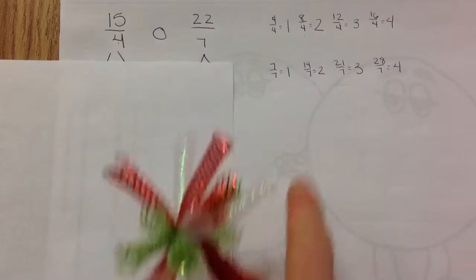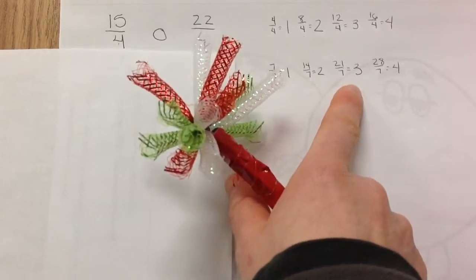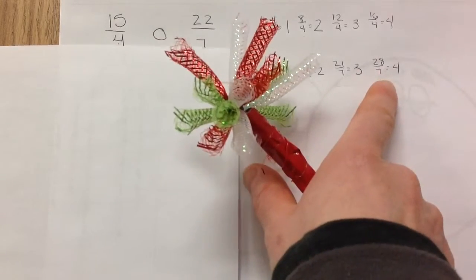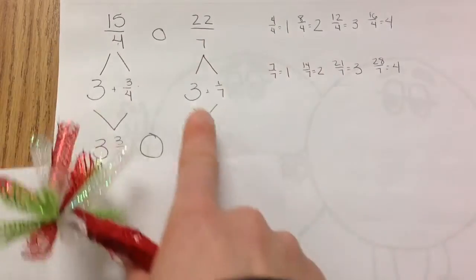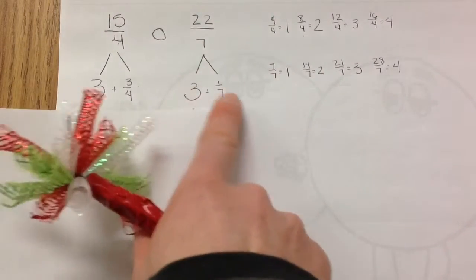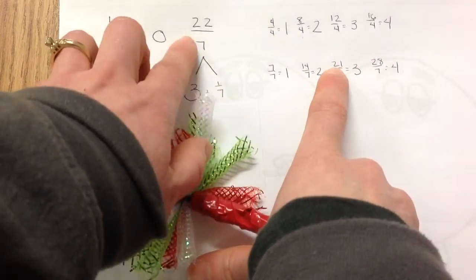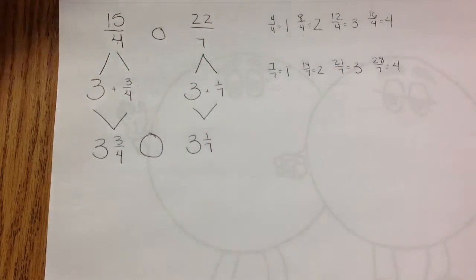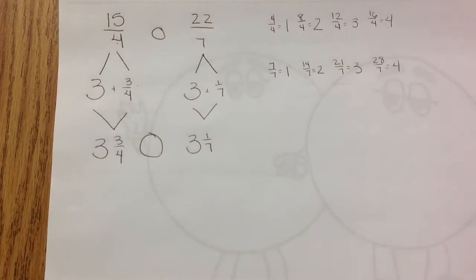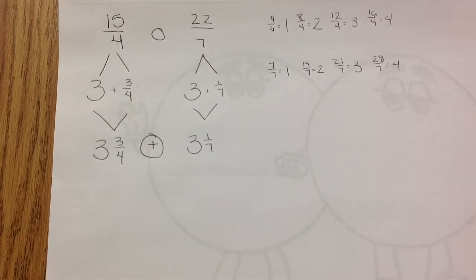What you should have found: seven-sevenths is one, fourteen-sevenths is two, twenty-one-sevenths is three, and twenty-eight-sevenths is four. We only have twenty-two-sevenths, so we pull out three wholes — that's twenty-one — and the leftover is one-seventh, because twenty-two minus twenty-one is one. So twenty-two-sevenths equals three and one-seventh. Now if we were comparing them, we know which one's bigger. What happens if I want to add them?